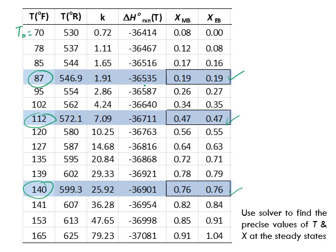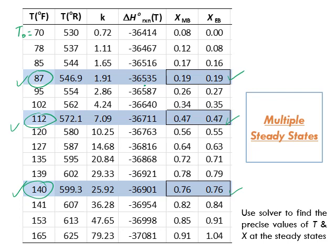Of course, for meeting the constraint of not having the temperature higher than 125 degrees Fahrenheit, I'll choose only the first and second steady states - not the third, because its temperature is very high. But more importantly, the key lesson we learn from this is that we could have multiple steady-states.